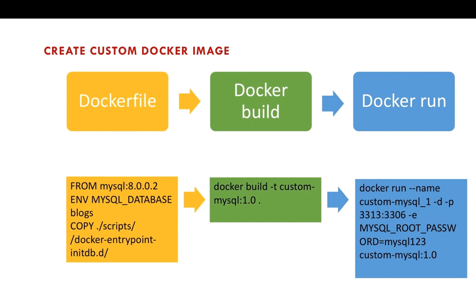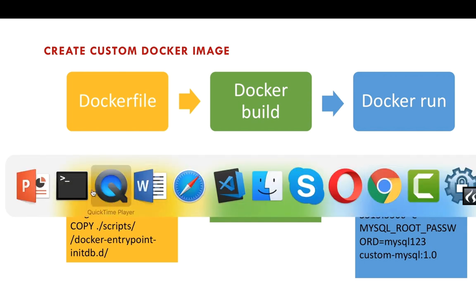Let's start this video from where we left the previous video. If you have to create your own Docker image, the process is: you create a Dockerfile, and once you have created a Dockerfile, you use the docker build command, specifying a tag like custom-mysql colon 1.0 indicating version 1. Then you can use docker run or, as we'll see in this demo, a docker-compose YAML file to get our container up and running.